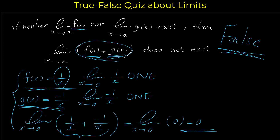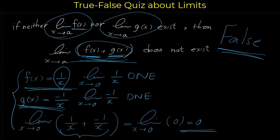Of course it is possible that the limit of f doesn't exist, the limit of g also doesn't exist, and the limit of their sum also doesn't exist — but it is not always true. Because it is not always true, as shown in this example, the statement is false.